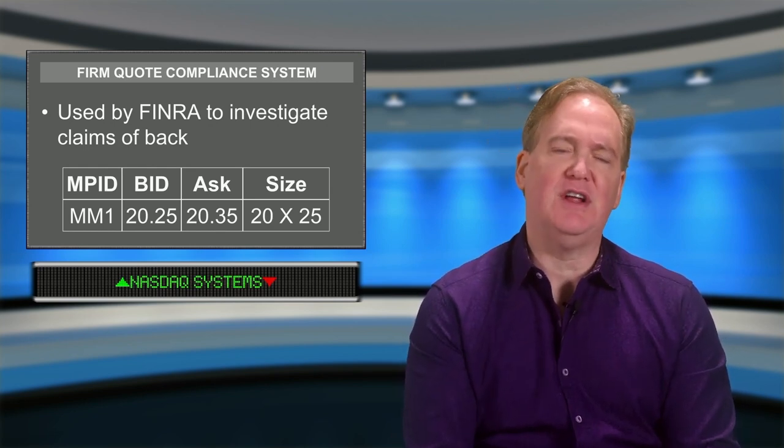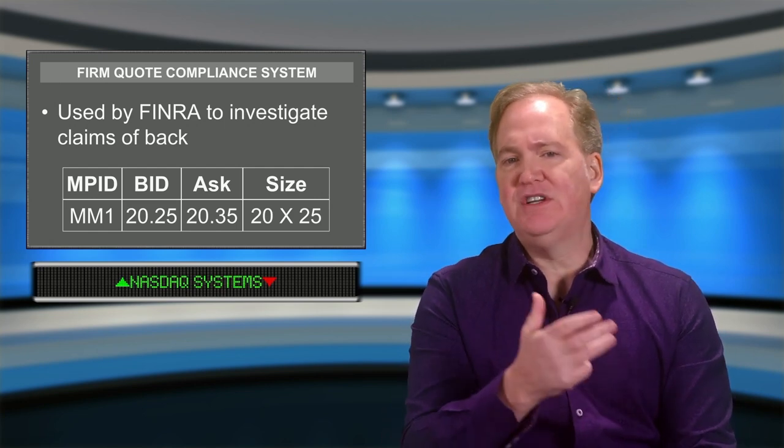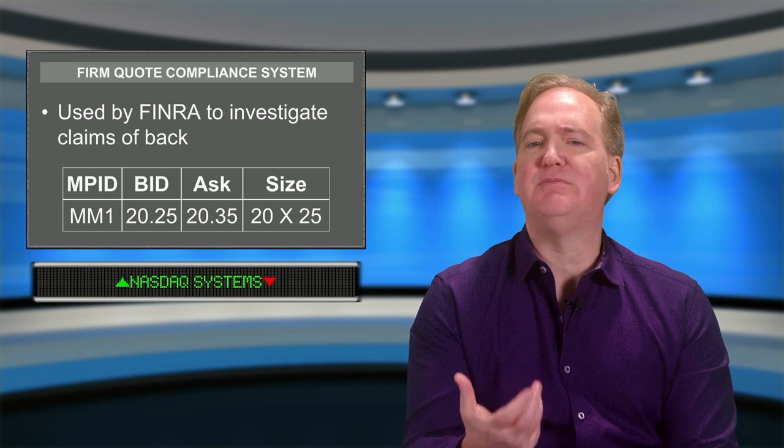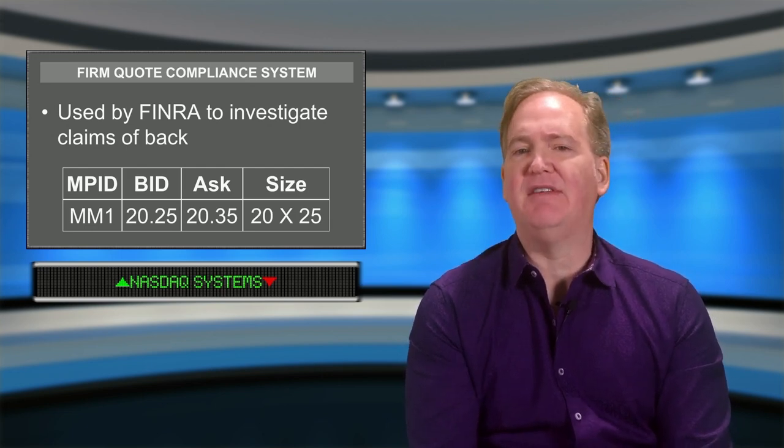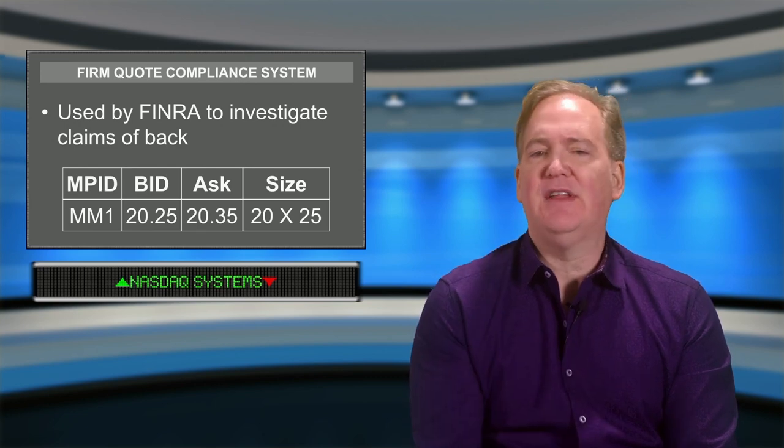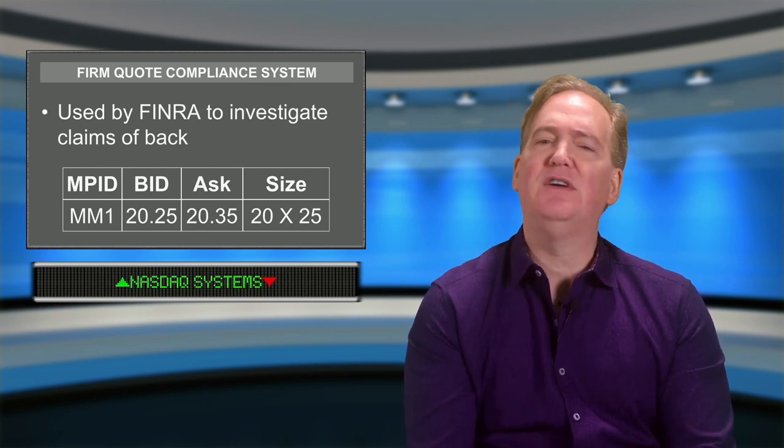Now let's look at the firm quote compliance system and how it is used by FINRA to ensure that market makers honor their quotes. When a market maker displays a bid and an offer for a security, they are required to honor those quotes at their displayed prices for their displayed size. If a market maker fails to honor those prices, the market maker has committed a violation known as backing away. FINRA takes these allegations seriously because it can impair the ability of investors to buy and sell securities. Here we have market maker one displaying a bid of 20.25 and an offer of 20.35.